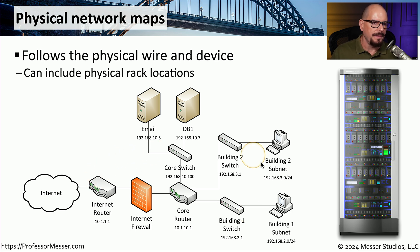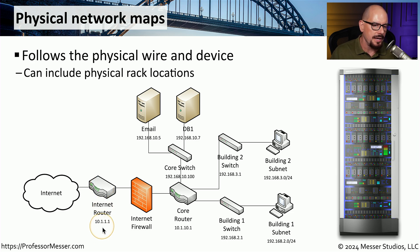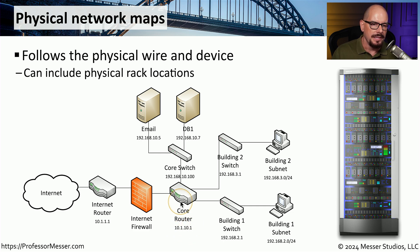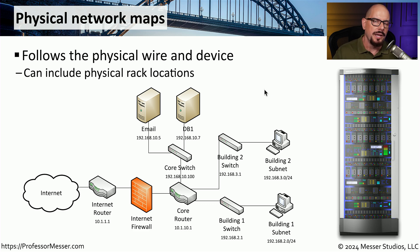This is an example of a physical network map. It shows a connection in from the internet with the physical cable plugging into the internet router, which can be found at 10.1.1.1. There is a physical wire connecting to the internet firewall and then another wire connecting to the core router, which is located at 10.1.10.1. This physical connectivity continues on through the rest of the diagram, and if you were to go into this room, you could track back that cable to this equipment using this physical network map.